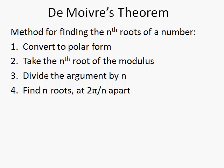So, there we have it. We convert to polar form, take the nth root of the modulus, divide the argument by n, and then find the n separate roots which are 2π over n apart.